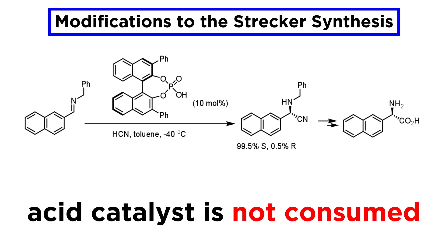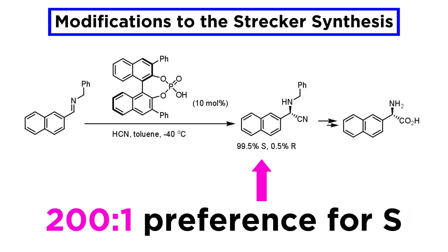After the synthesis, the small amount of chiral acid is available to perform another cycle, because it is not consumed. In the case of this unnatural aminonitrile, the enantioselectivity of the process is excellent, with a preference for the S isomer of two hundred to one, which propagates through to the product.